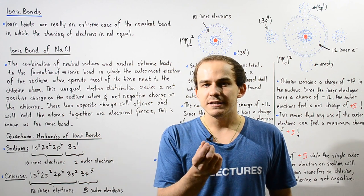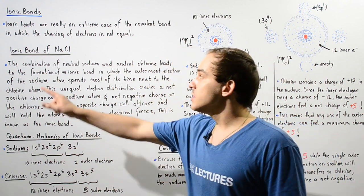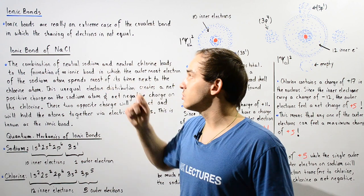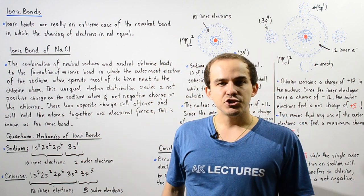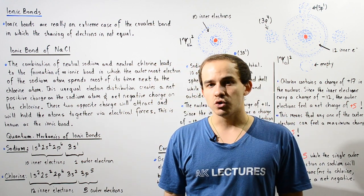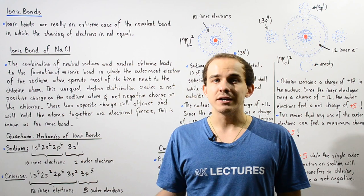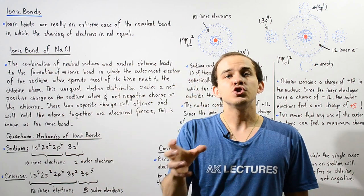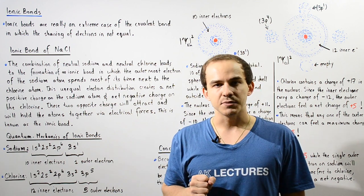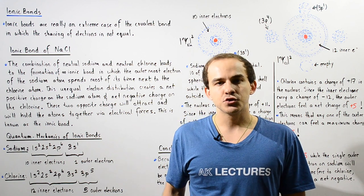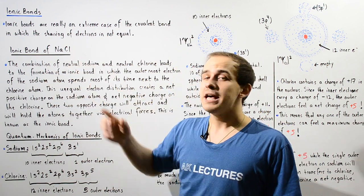To understand that definition of an ionic bond, let's look at one particular example — the ionic bond that exists between sodium and chloride inside the sodium chloride molecule. Basically, the combination of neutral sodium and neutral chlorine leads to an unequal distribution of electrons. An electron is transferred from sodium to chlorine, and that means the electron will spend most of its time around the chlorine atom. This unequal electron distribution leads to a positive charge on the sodium and a negative charge on the chlorine atom.